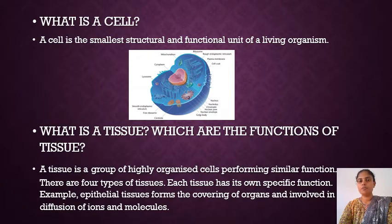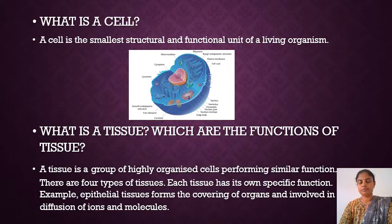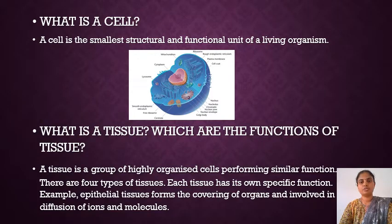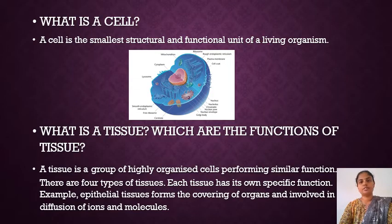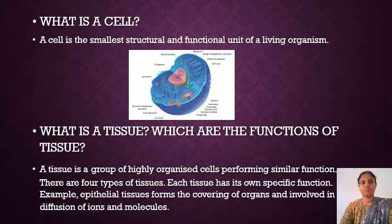Epithelial tissue lets ions and molecules pass through it. Connective tissue connects the parts of the body. Then there are muscular tissues and nervous tissues.